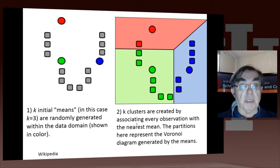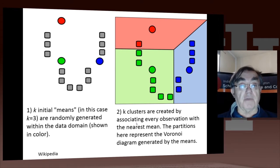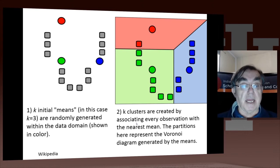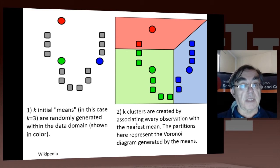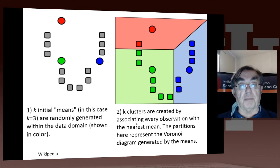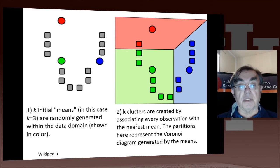Here's a simple example taken from Wikipedia. We have 11 gray squares — those are the points — and we want to divide them into three clusters. We choose three cluster centers randomly: the red, the green, and the blue circles. Then we do the first step in the k-means algorithm and associate points with centers. You can see that five blue points are associated with the blue circle, five green points with the green circle, and just one red point with the red circle.